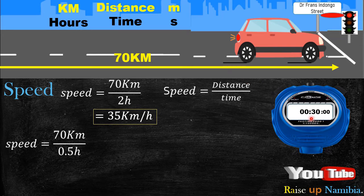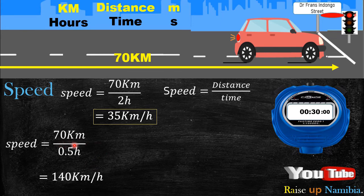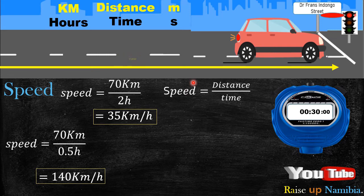30 minutes converted to hours is 0.5 hours. If you don't know how to convert minutes into hours, mention it in the comments and I'll make a video on that. So 70 divided by 0.5 gives you 140 kilometers per hour.